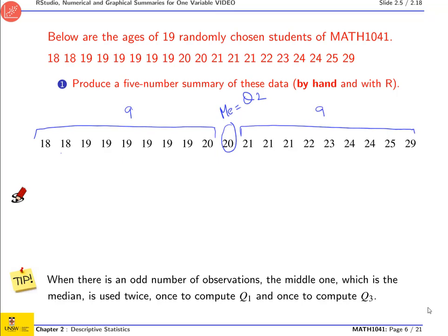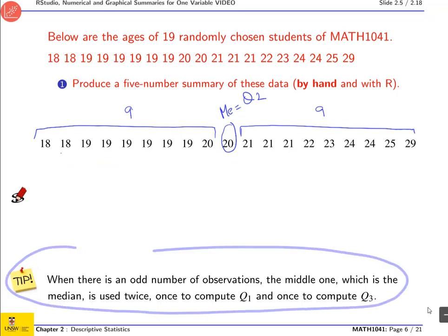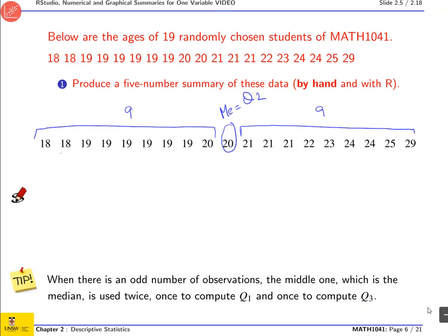Please note that we do not get the five numbers of the five-number summary from smallest to largest. You need to start by the median. So then what you want to do is to split again the groups you have there in half. The doubt you may have is whether you need to split that group or should you include the median. Well, if there is an odd number of observations, the middle one — the median — is used twice: once to compute Q1 and once to compute Q3.